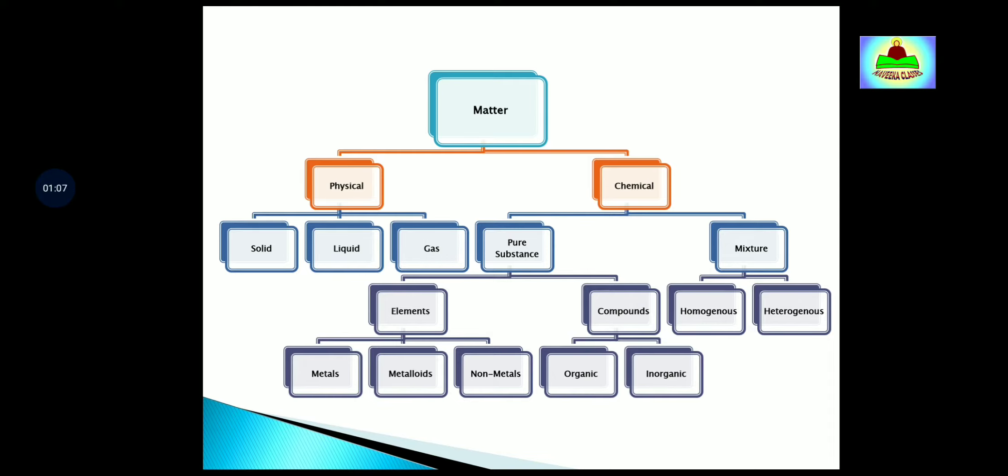Physical properties on the basis of visibility are divided into three parts: solid, liquid, and gas. We will not discuss here in detail as you already learned in your previous classes what is solid, liquid, and gas. Now next is chemical properties. Chemical properties are divided into two parts: pure substances and mixtures.